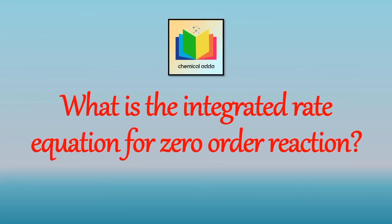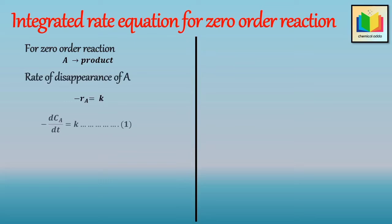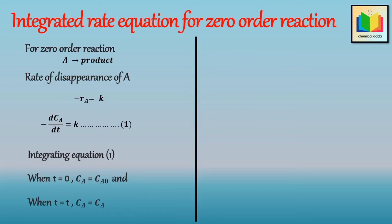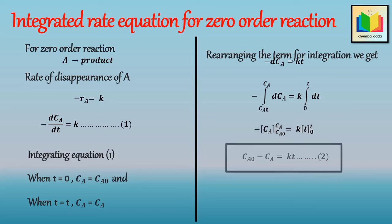Now let's see the integrated rate equation for the zero order reaction. If the zero order reaction is A gives product, then the rate of disappearance of A can be written as minus r_A is equal to k, which can be written as minus dC_A by dt is equal to k. Integrating equation 1 within the limits — when t equals zero, C_A equals C_A0, and when t equals t, C_A equals C_A — we rearrange to get minus dC_A equals k dt. After integration and applying limits, we get C_A0 minus C_A is equal to k t. This is the integrated rate equation for zero order reaction in terms of concentration.